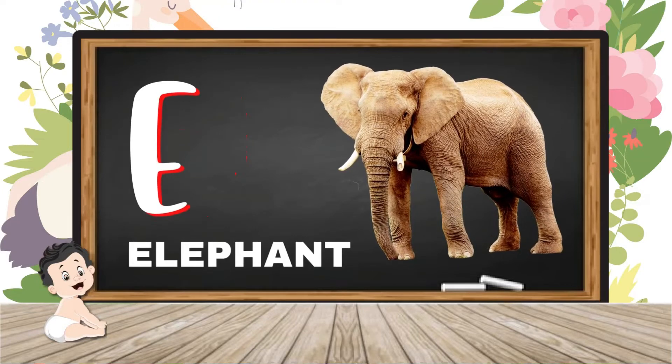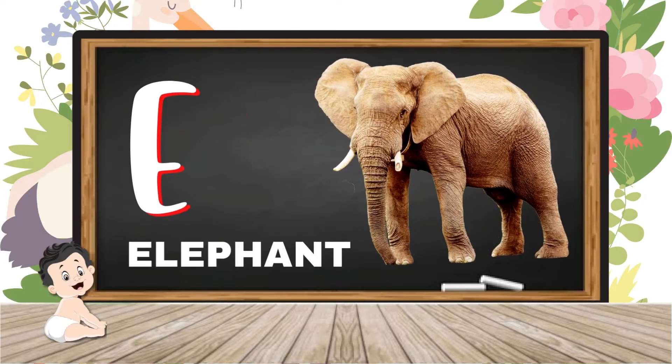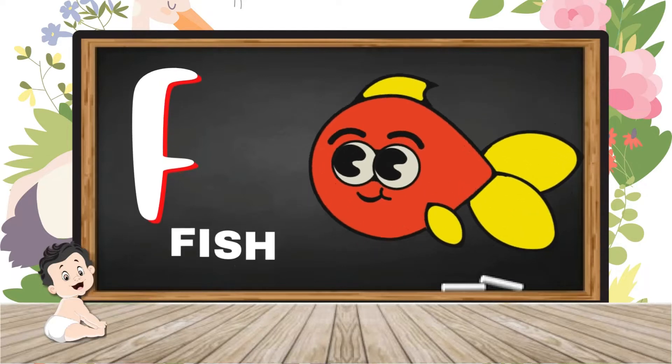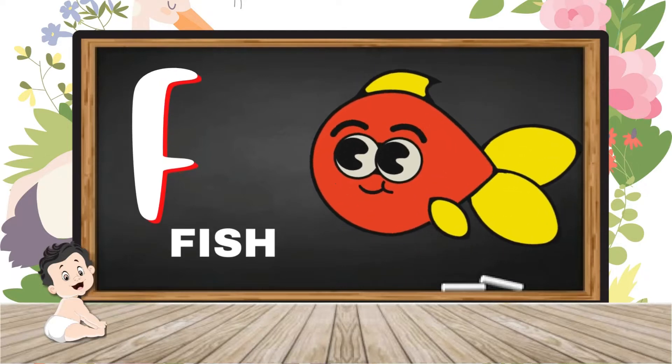E for elephant, elephant means aath. F for fish, fish means machli.